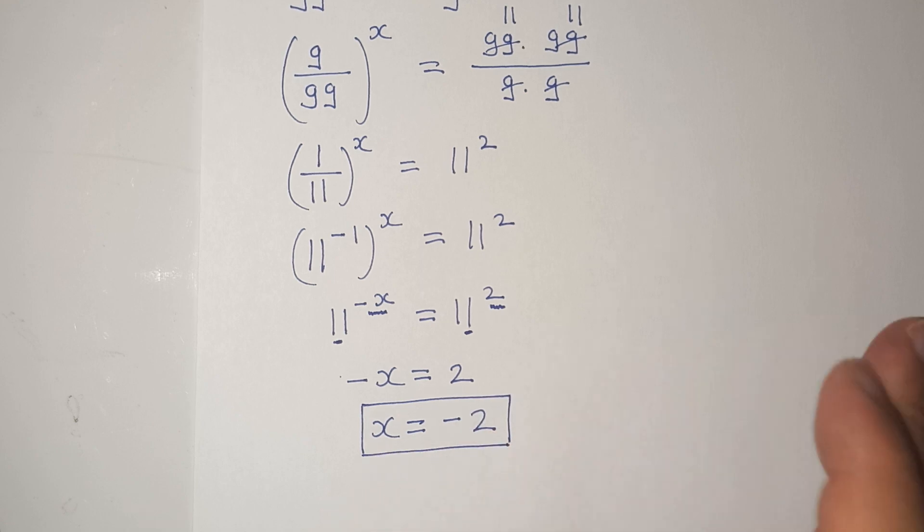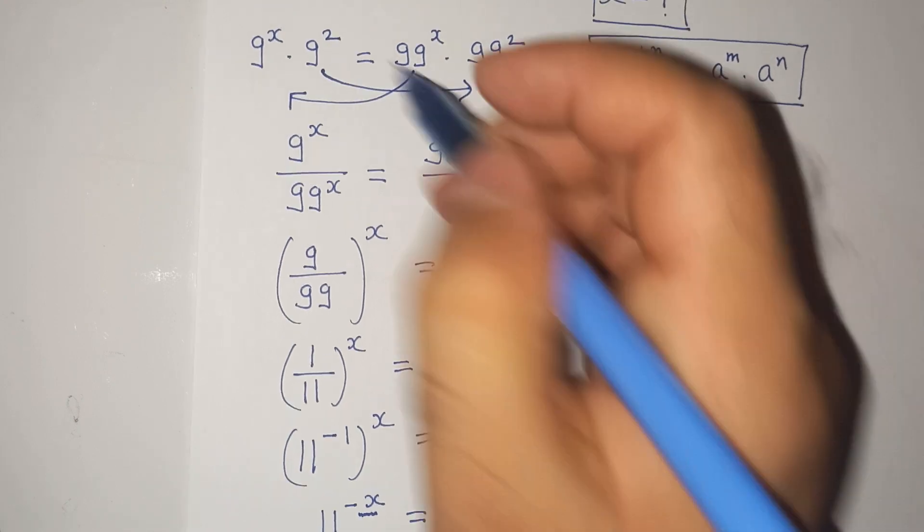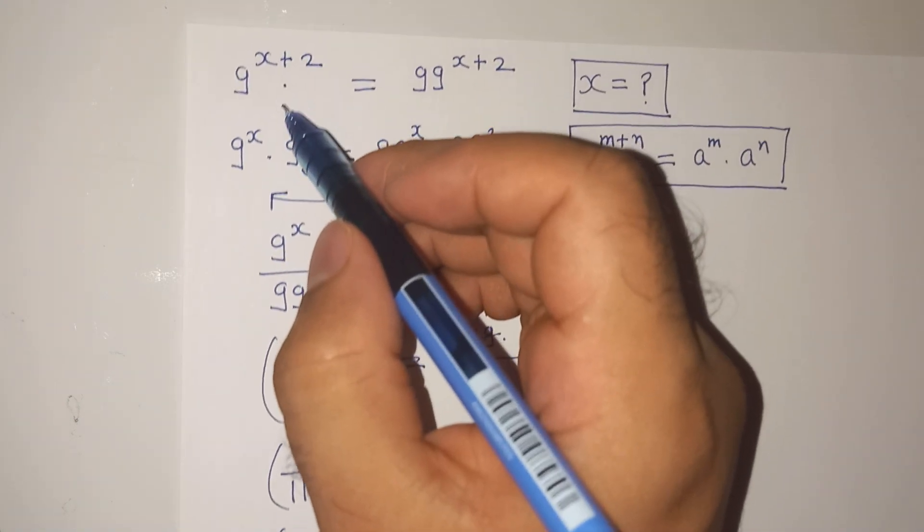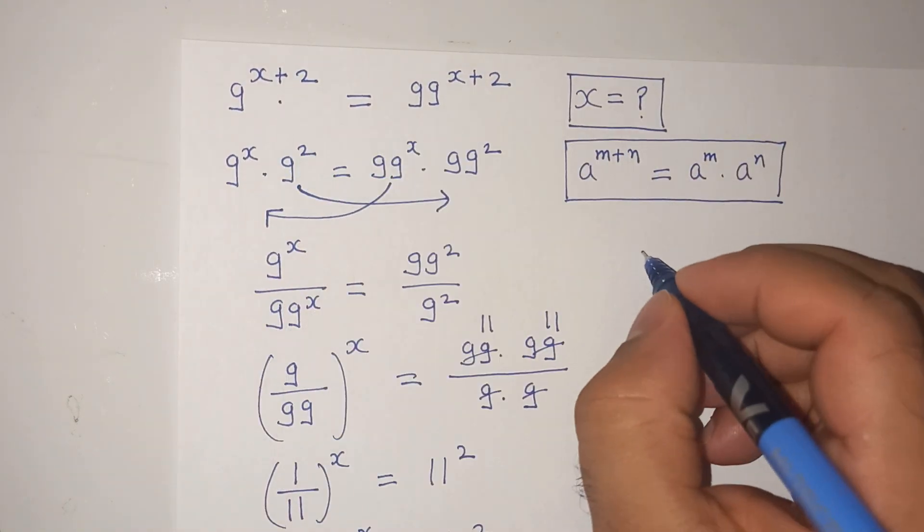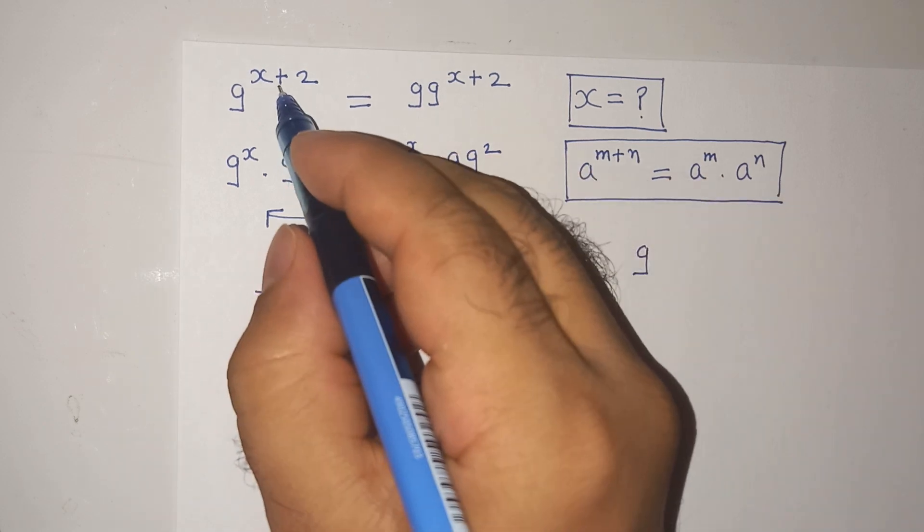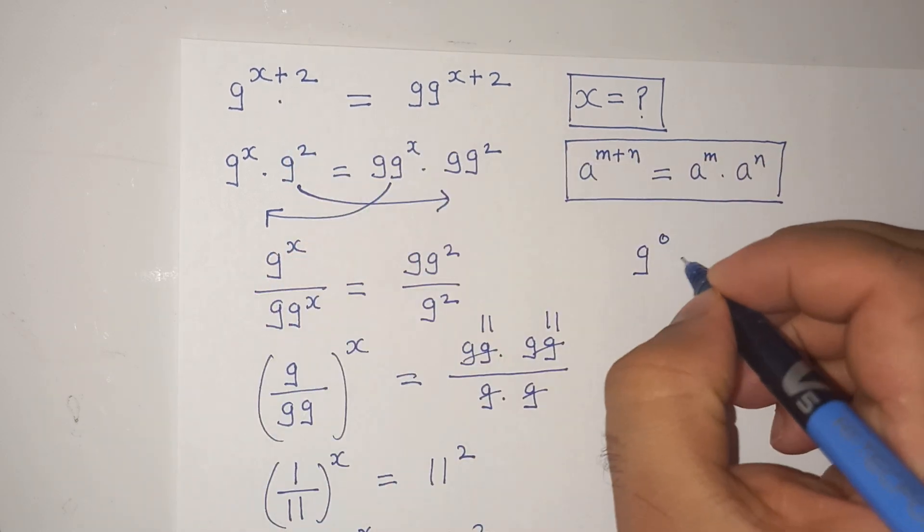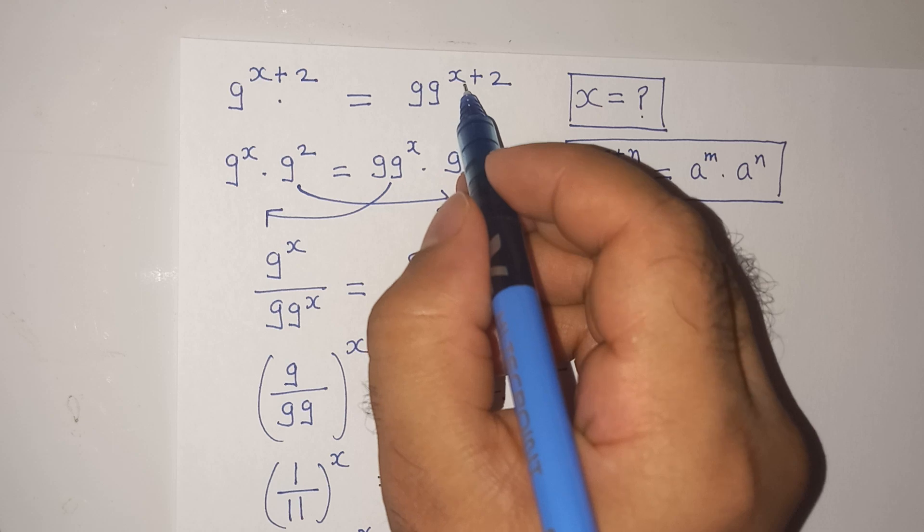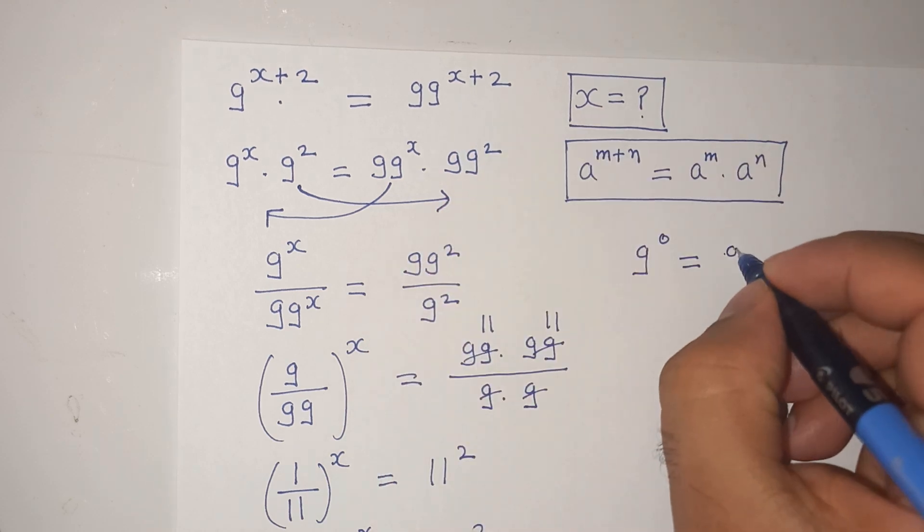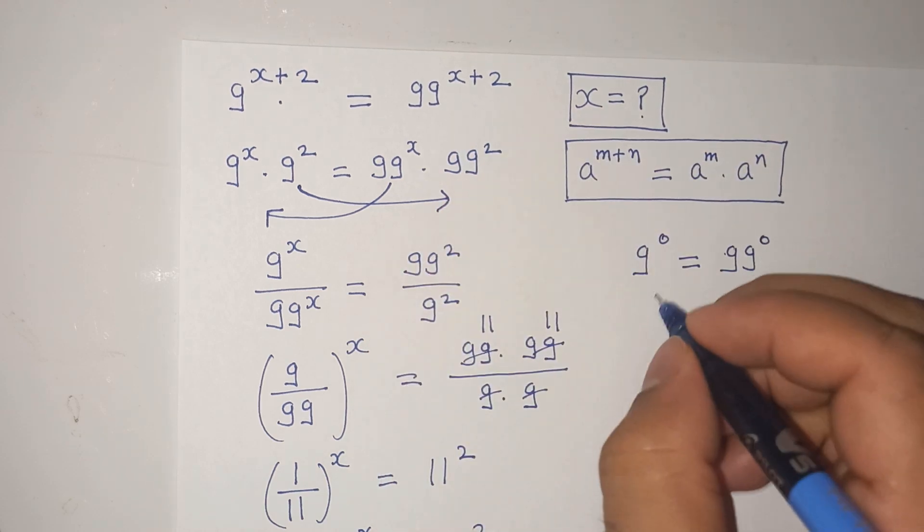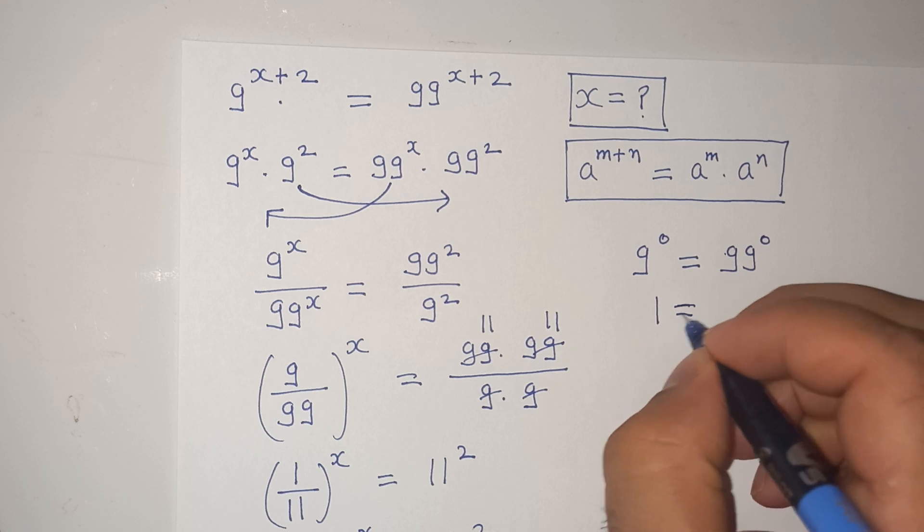We can check our answer by putting the value of x minus 2 in the above equation. So we will have 9 minus 2 plus 2 is 0 equals to 99 minus 2 plus 2 is again 99 power 0 so which is 1 equals to 1.